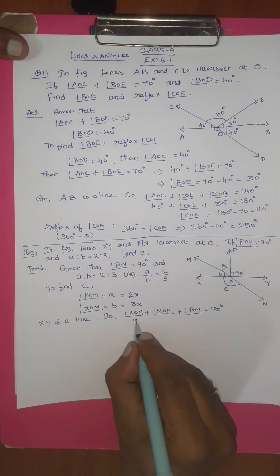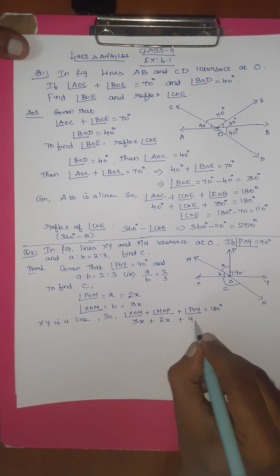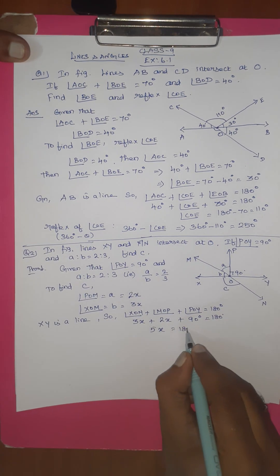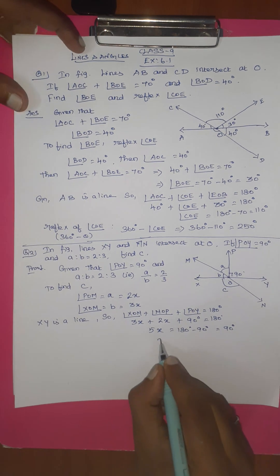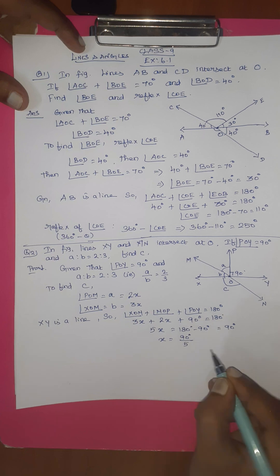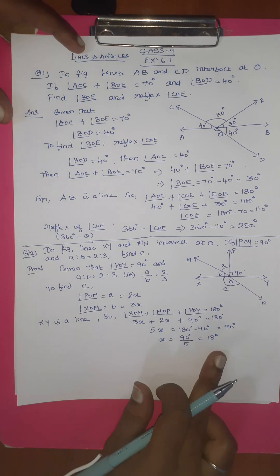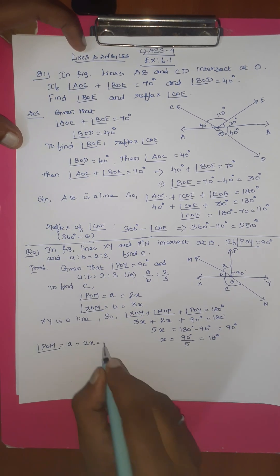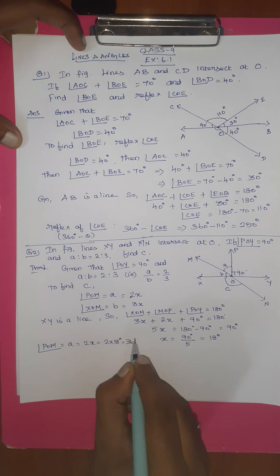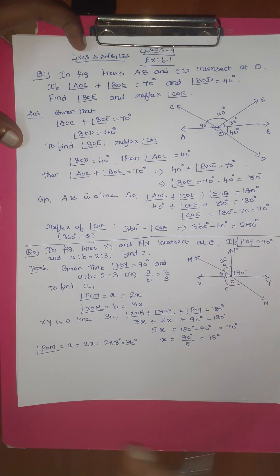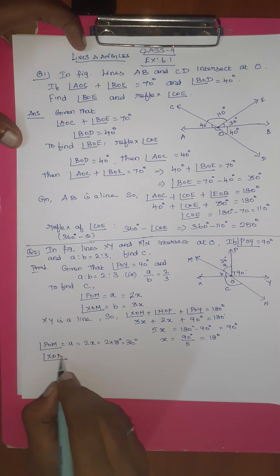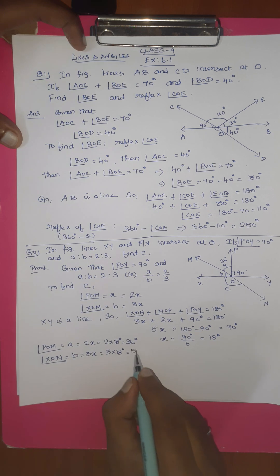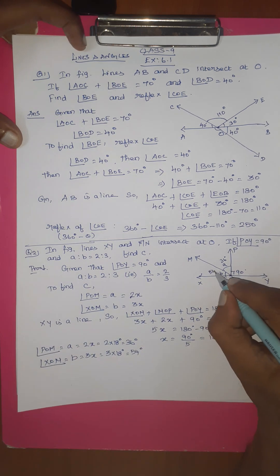So 3x plus 2x plus 90 degrees equals 180 degrees. That gives 5x equals 90 degrees, so x equals 18 degrees. Angle POM equals 2x equals 36 degrees, so angle A equals 36 degrees. Angle XOM equals 3x equals 54 degrees, so angle B equals 54 degrees.